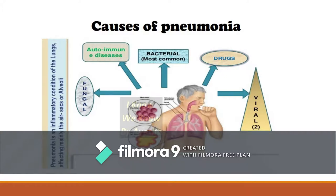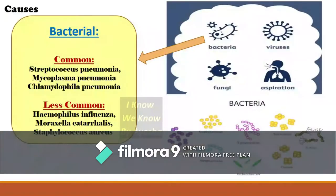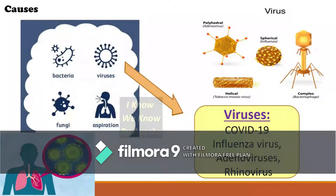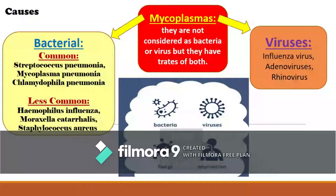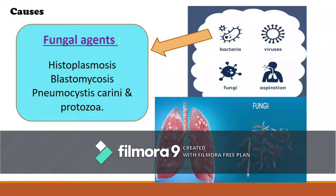There are many causes of pneumonia: fungal infections, bacteria, viruses, drug overdose, and autoimmune diseases. The most common bacteria causing pneumonia are Streptococcus pneumoniae and Mycoplasma pneumoniae. Less common bacteria include Haemophilus influenzae and Moraxella catarrhalis. Viruses causing pneumonia include COVID-19, influenza virus, adenovirus, and rhinovirus. Mycoplasmas are not considered bacteria or virus but have traits of both. Fungal agents include Histoplasma, Blastomyces, Pneumocystis carinii, and protozoa.